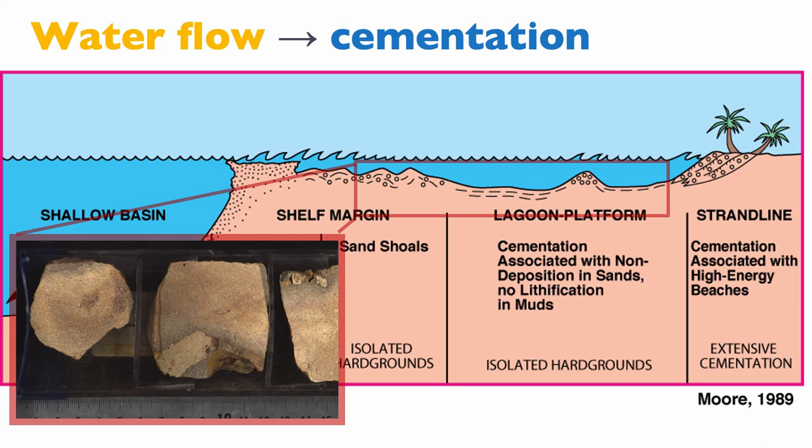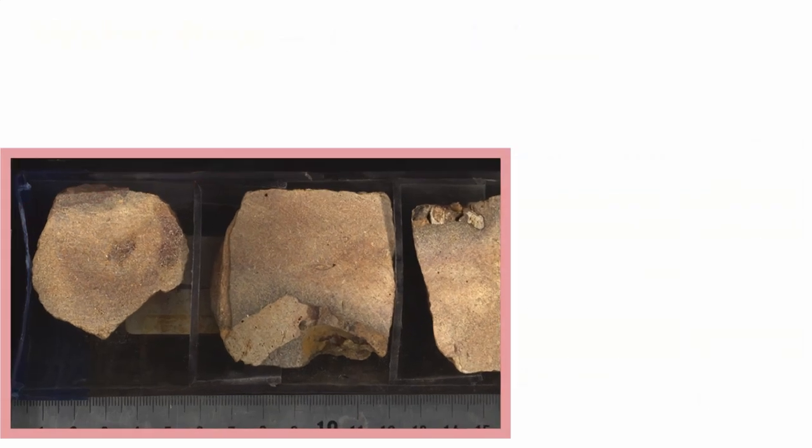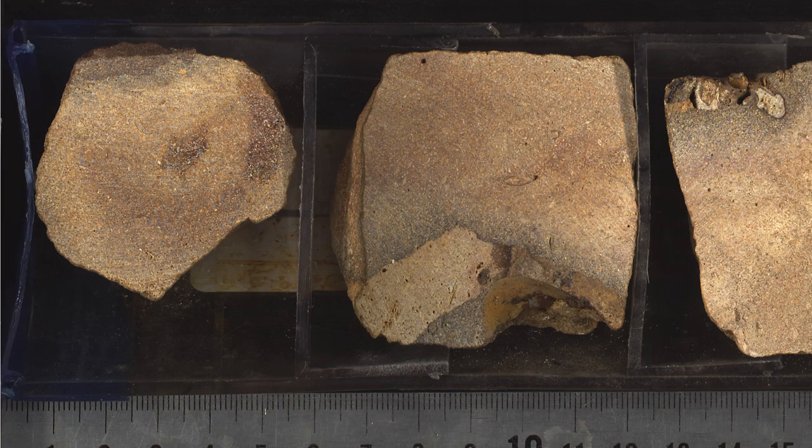Looking at the lagoon, we find hard grounds. These are not always present in the lagoon but are not uncommon. To understand why you can have hard grounds in the lagoon, remember what the water-rock ratio is proportional to: flow and volume of water over time. We don't have a lot of flow in the lagoon, but if there is low sedimentation, the sediments stay at the water-sediment contact for longer, so even without much flow you can bring cations and anions to the site of mineralization by diffusion.